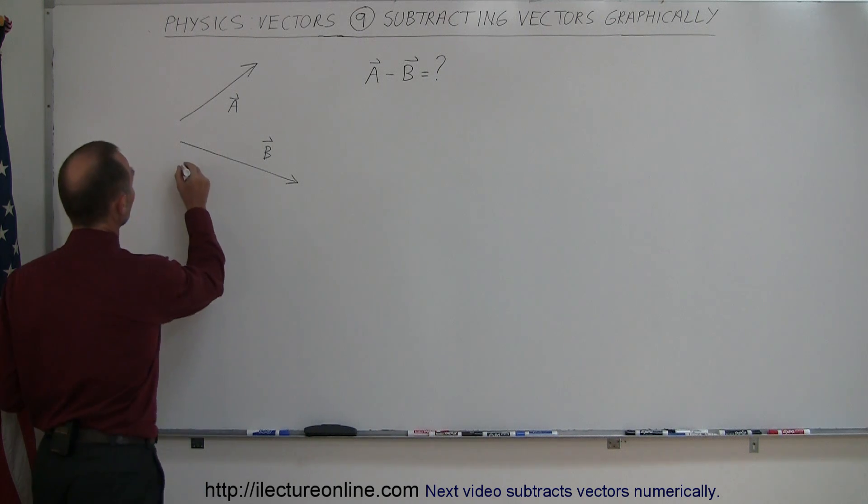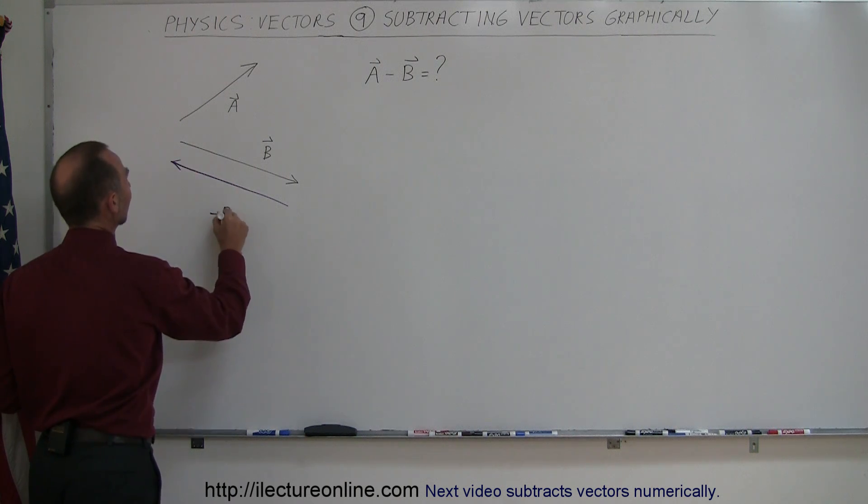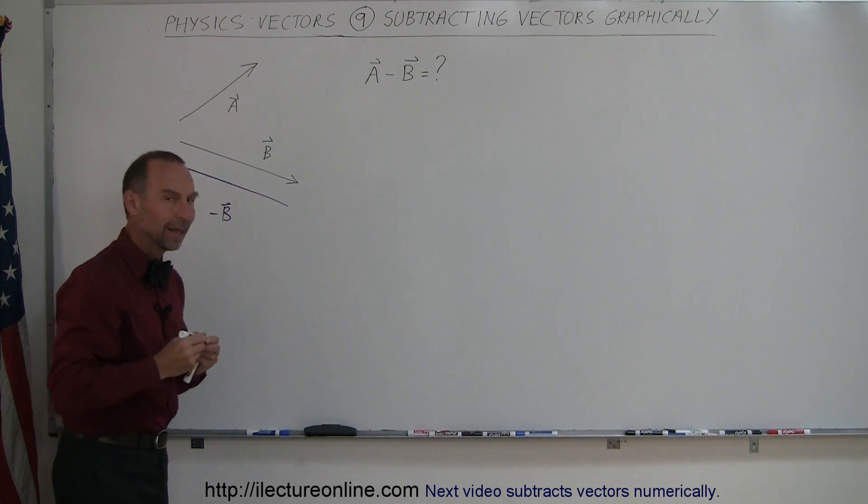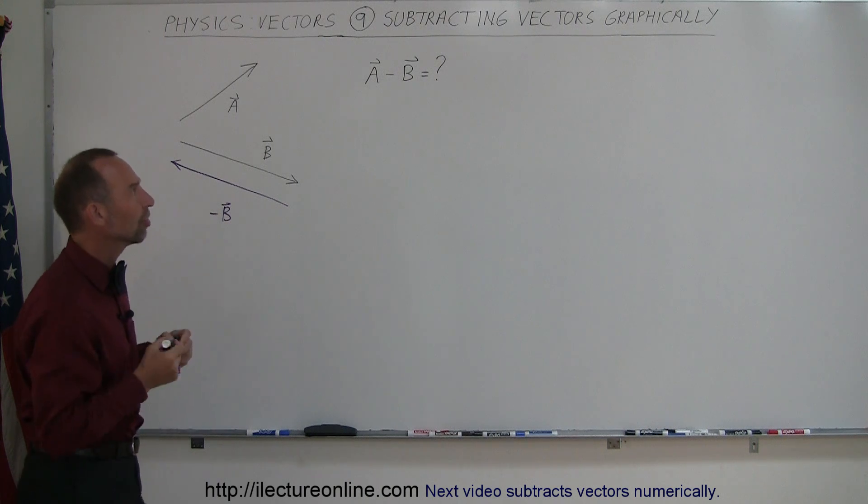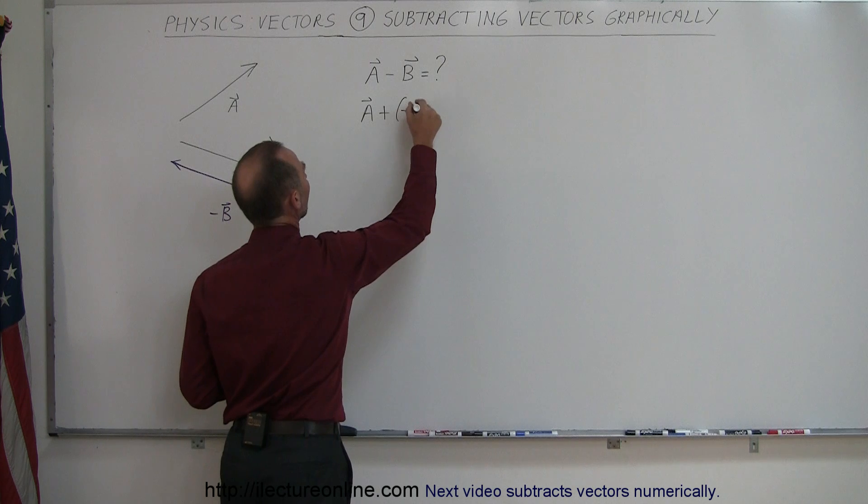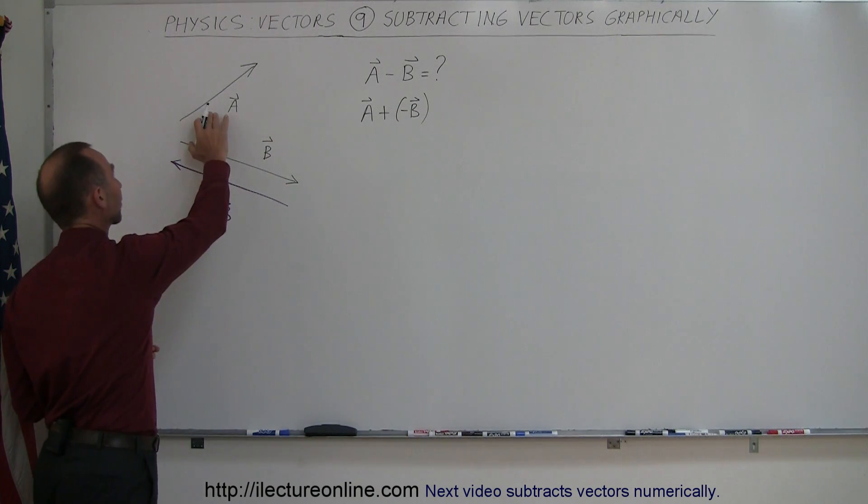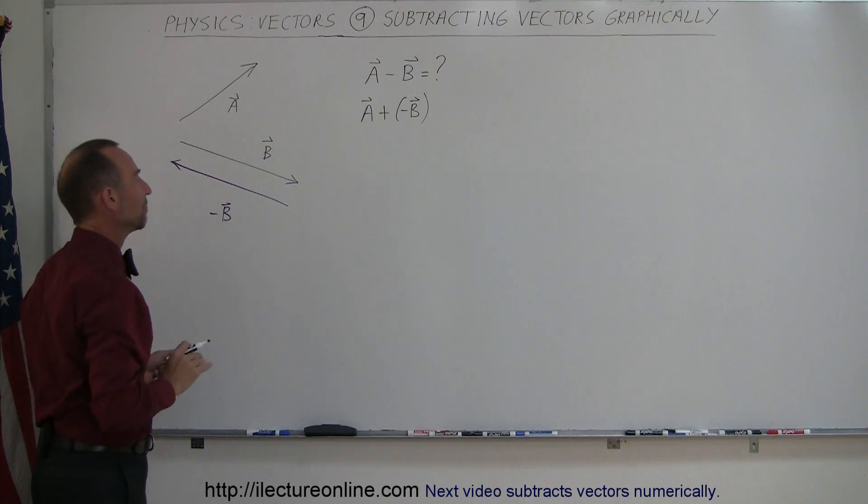So if I draw vector B like this, this is actually the negative of vector B. Now that I know that, what I can change this to is A plus negative B. And then all I have to do is simply add this A vector to this negative B vector.